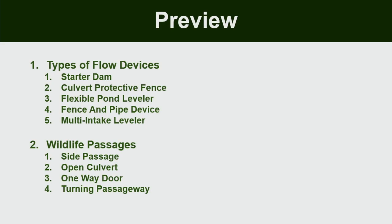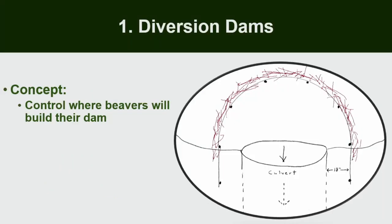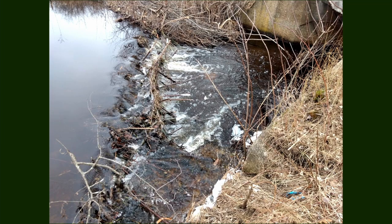Forgive me if I call starter dams diversion fences — I've always called them diversion fences and everyone's been calling them starter dams, so I'll probably mix that up. This is one of the easiest fixes to prevent beavers from clogging a culvert. The concept is you want to control where the beavers will dam, so we build a small fence — it can even be a rock wall — that catches debris, creates noise, and draws the beavers to dam there instead of inside the culvert.